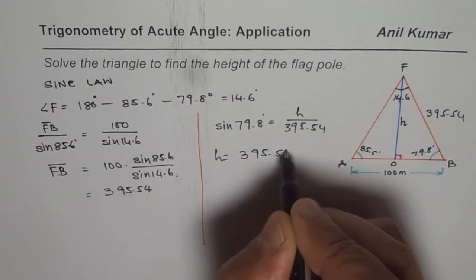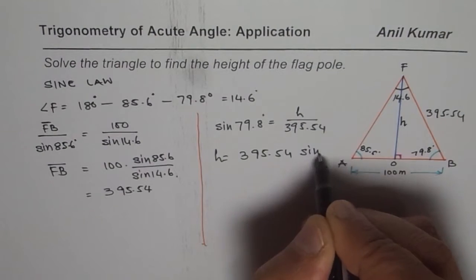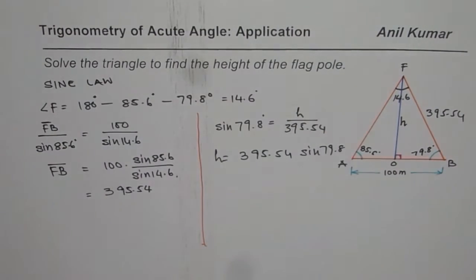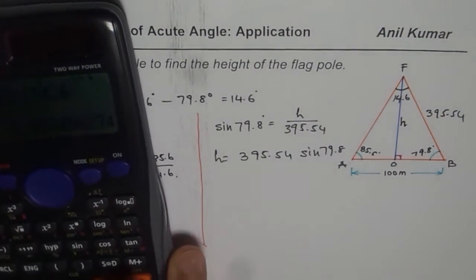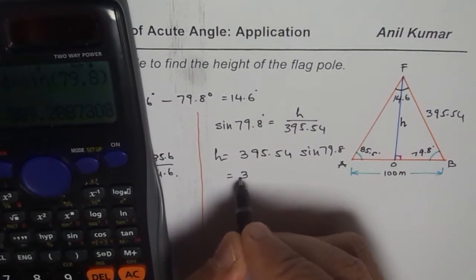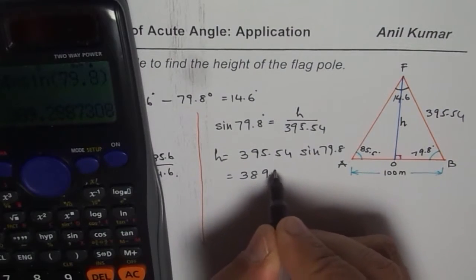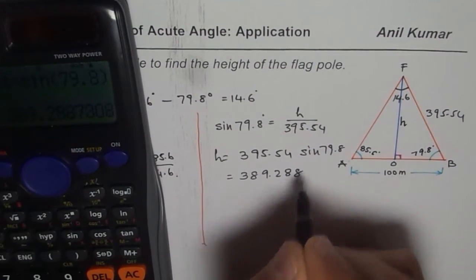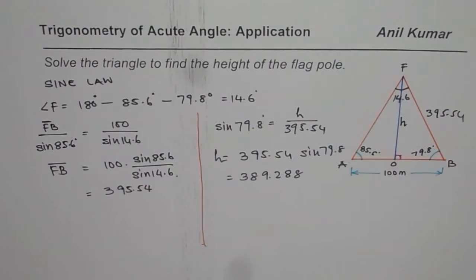Let's do it. We already have 395.54. Multiply this by sine of 79.8 degrees. That gives us 389.288.